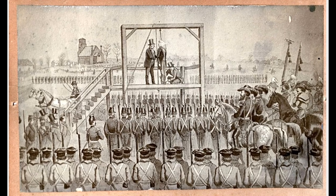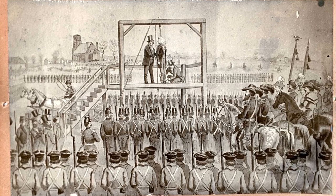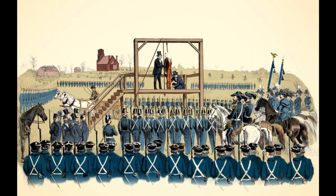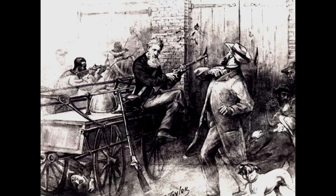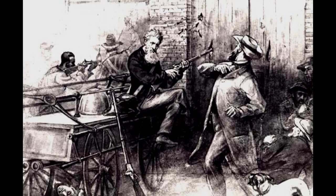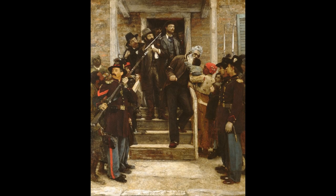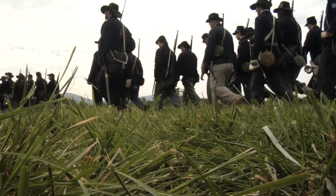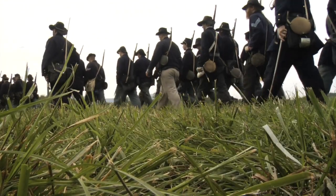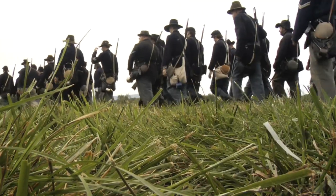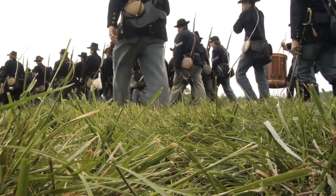Brown's execution sharply divided the country and became a flashpoint. Some Northerners declared Brown a martyr and a hero. Southerners celebrated his execution like a holiday and speculated that Brown's raid was evidence of the North's intentions to bring an end to slavery in America by force and bloodshed. The difference between North and South had come to a head. The South was beginning to feel that they were a separate nation from the North, and the divides between the two regions were moving towards irreparable breakdown.